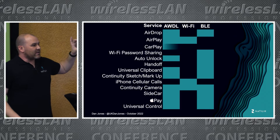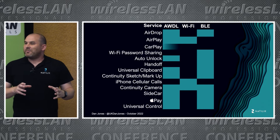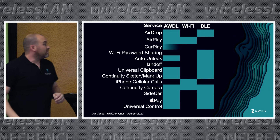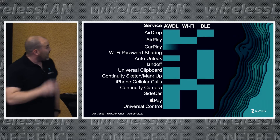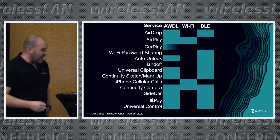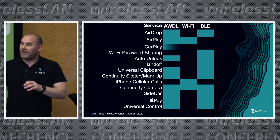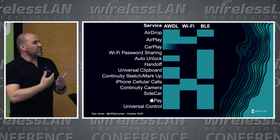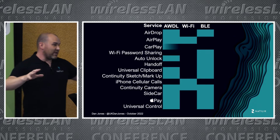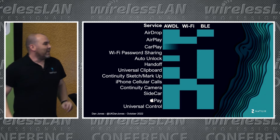CarPlay is interesting because it's actually using the iPhone hotspot protocol with the car. In my car it's using channel 6, not the 5 GHz section, which is probably because it's cheap. Wi-Fi password sharing uses the Apple Wireless Direct Link discovery mechanism — that's why you can only share a password with someone in your contacts. It actually knows all the other Apple Wireless Direct Link users around you. You can change that on your device and say 'let anyone talk to me,' but I wouldn't do that.